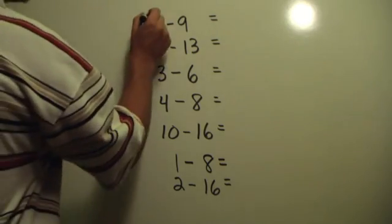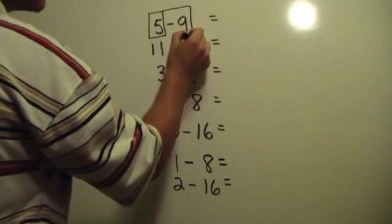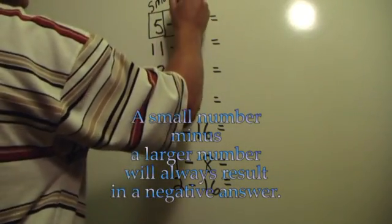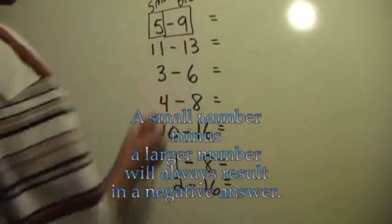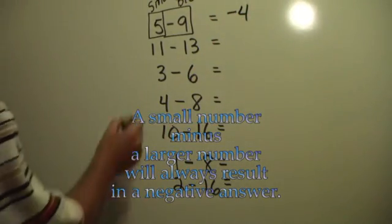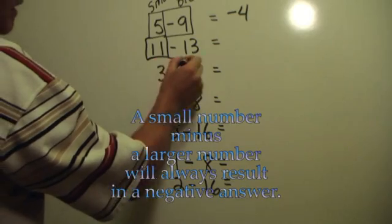The word and, you'll hear me use it a lot. Five and negative nine. A small number minus a larger number will always result in a negative answer. A small number like five, take away nine, negative four.